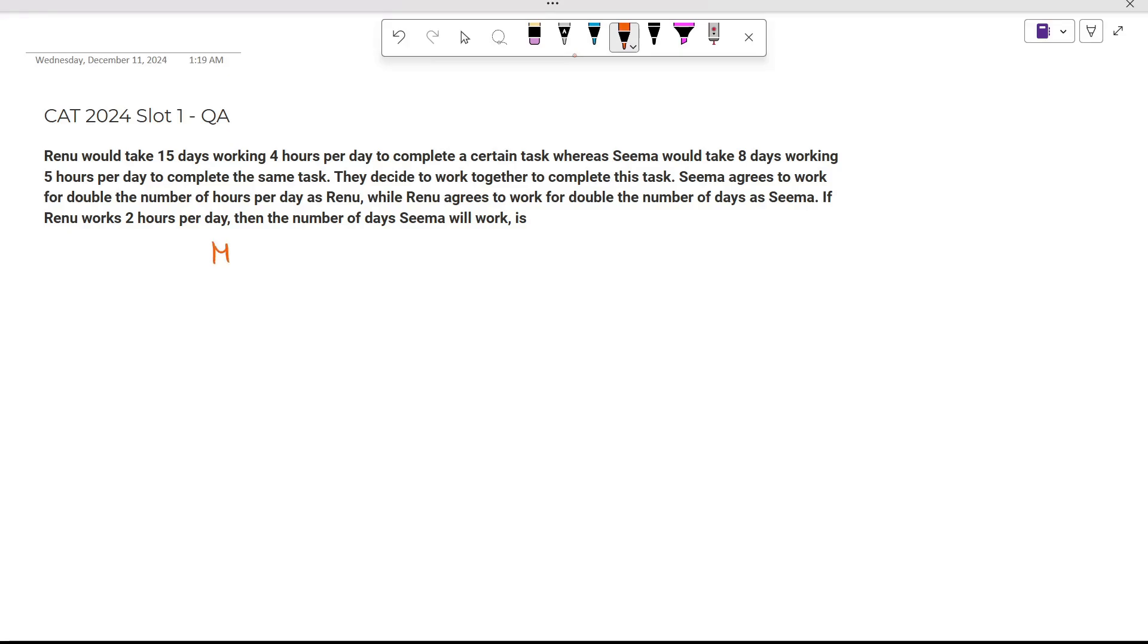There is a formula: M₁D₁H₁E₁/W = M₂D₂H₂E₂, where M stands for men, D stands for days, H stands for hours, and E stands for efficiency. In this question, let the efficiency of Renu be capital R and the efficiency of Sima be capital S.